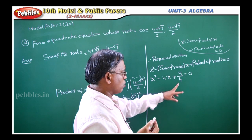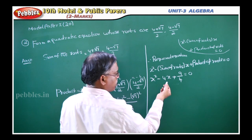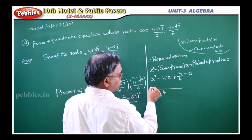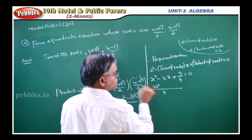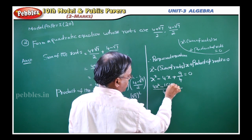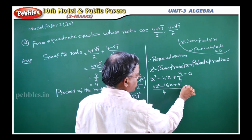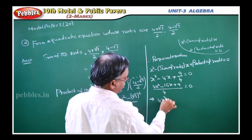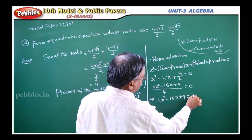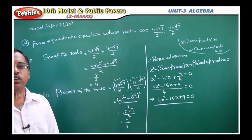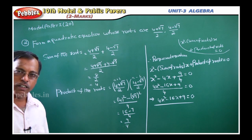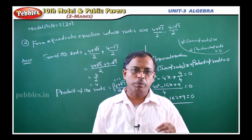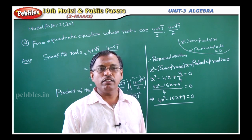You can simplify by taking LCM = 4, giving 4x² - 16x + 9 = 0. That is the required quadratic equation. Very simple — only thing is you need to find two values, sum of the roots and the product of the roots, then substitute in the formula.